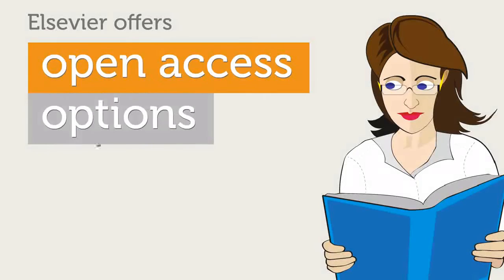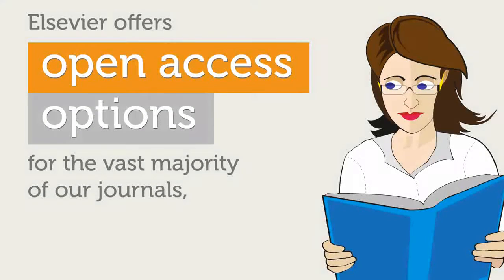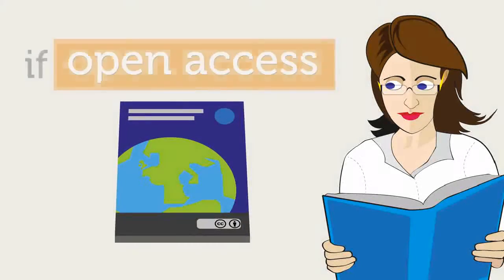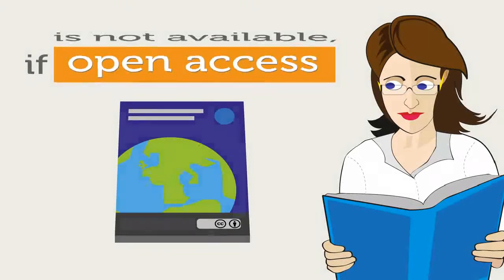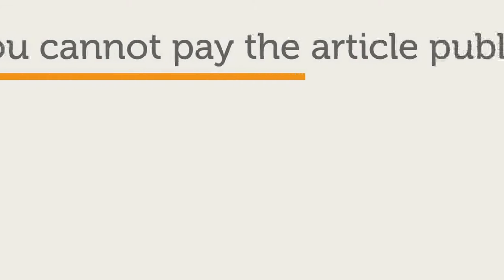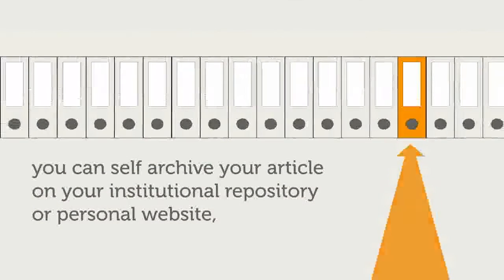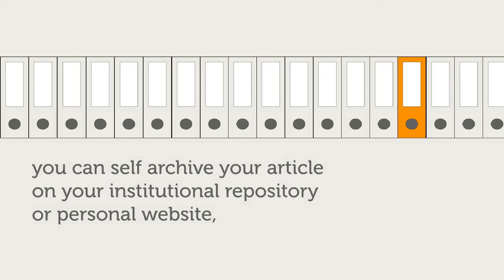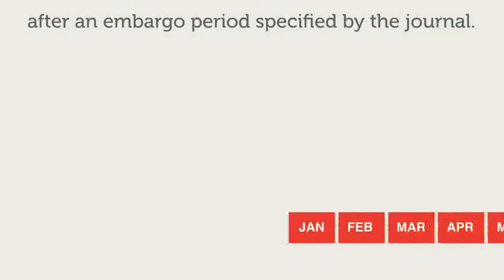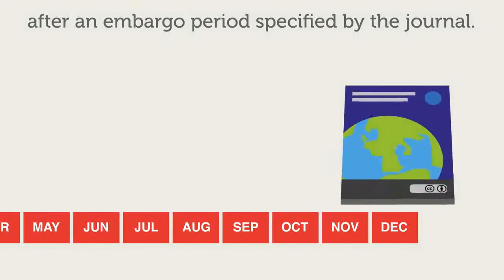Elsevier offers open access options for the vast majority of our journals. If open access is not available, or you cannot pay the article publication fee, you can self-archive your article on your institutional repository or personal website after an embargo period specified by the journal.